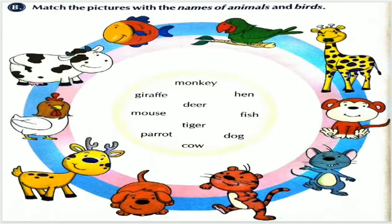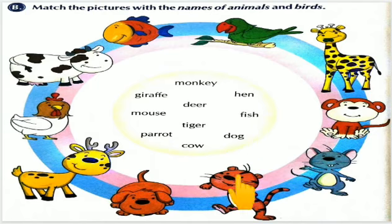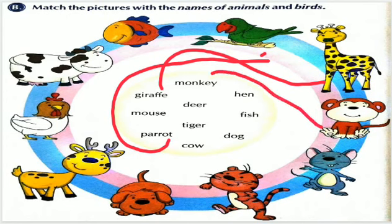Next mein hai — B: Match the pictures with the names of animals and birds. Yahan pe bahut saare animals aur birds ke pictures hain, aur yahan center mein unke naam hain. Toh hume kya karna hai? Unke saath match karna hai. Toh chalo karte hain. Pehle hai parrot — yeh parrot. Toh parrot ka naam kahan pe hai? Yeh raha. Second mein hai giraffe — toh giraffe ka naam kahan pe hai? Yeh raha. Uske baad hai monkey — toh monkey kahan pe hai? Yeh raha.